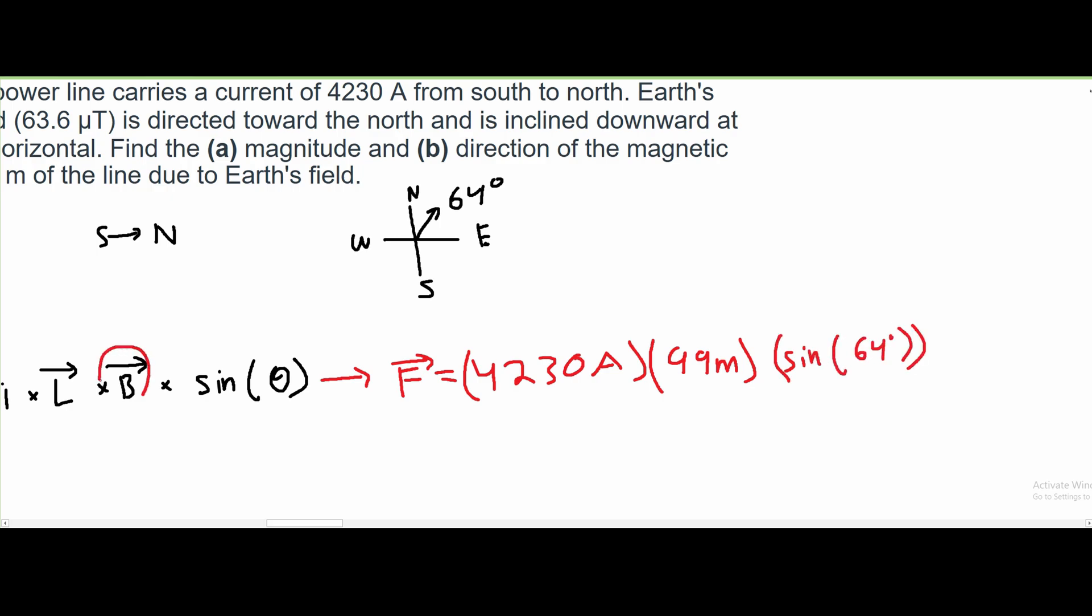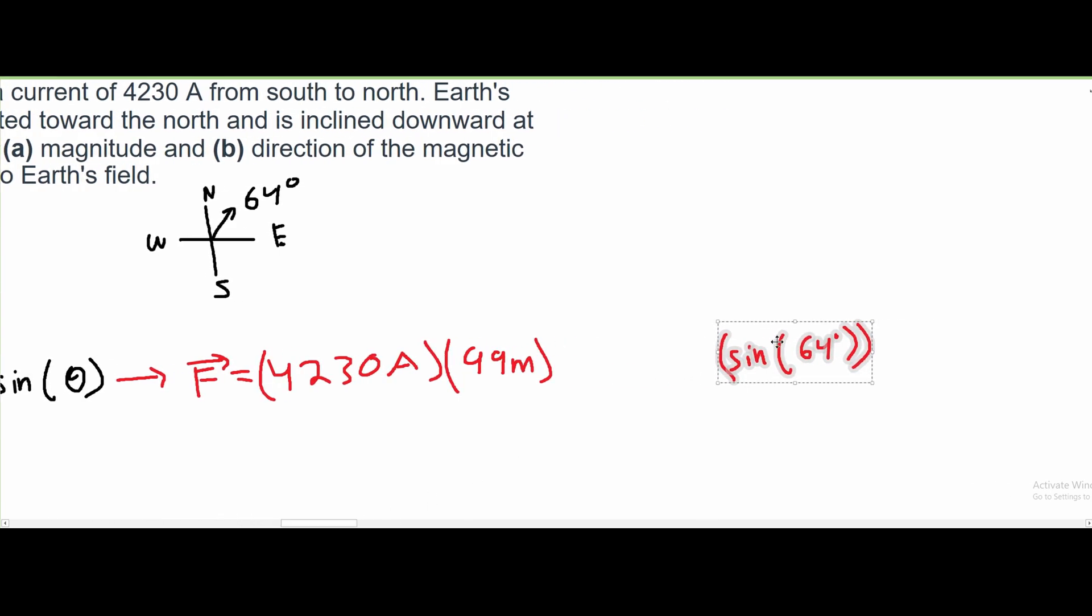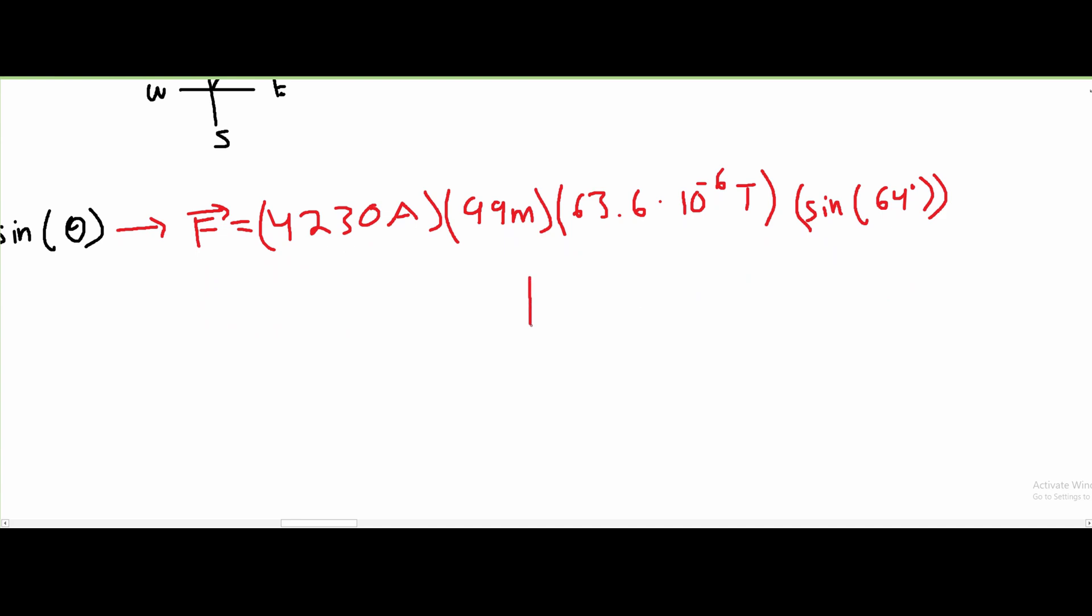We can't forget about our B, which is the magnetic field. So if we scoot our sine over, we can put in the magnetic field, which is 63.6 microteslas. And we need to convert that to teslas. So we have 63.6 times 10 to the negative 6 teslas. After we plug all this into our calculator, we are going to get that our F or our magnitude is approximately 24 newtons. And that is for A.